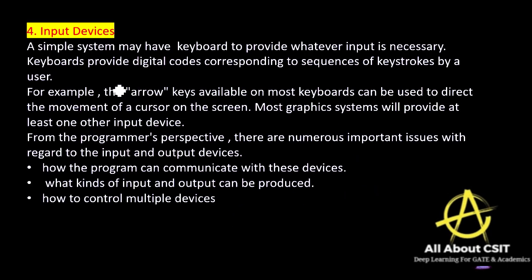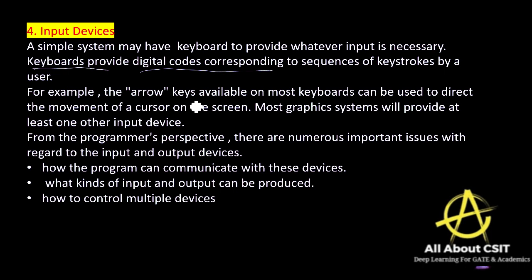Input devices include the keyboard, where a digital code corresponds to the sequence of keystrokes. For example, arrow keys direct cursor movement to the left or right on screen. Most graphic systems will provide at least one other input device beyond the keyboard.